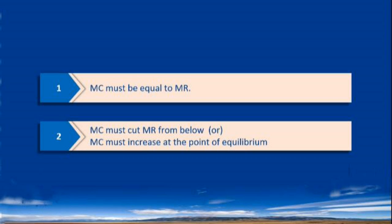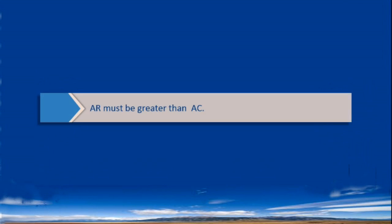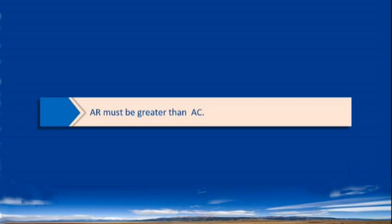The condition for Super Normal Profit is that Average Revenue must be greater than Average Cost. Now we shall proceed to discuss the Short Run Equilibrium of the Firm.